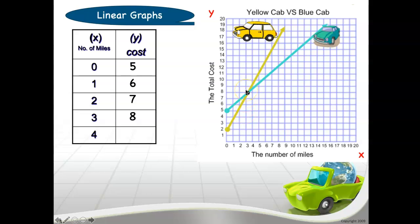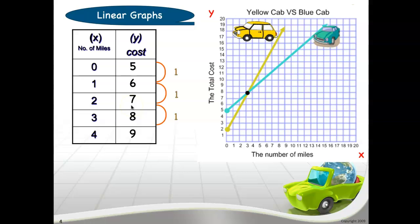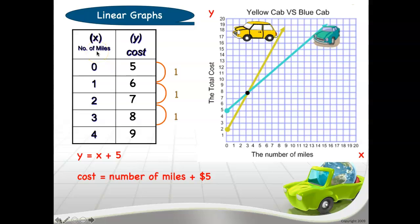For four, I go up until it touches the blue line and it says nine. From here we can say the difference from five to six is one, so the rate of change is one. From zero it becomes five, from one it becomes six, from two it becomes seven — it adds by five. We can write the equation as y equals x plus five. Y is cost and X is the number of miles. The rule is plus five dollars.